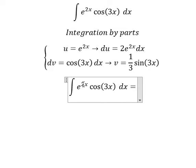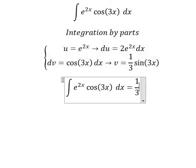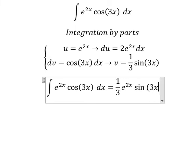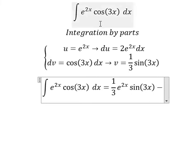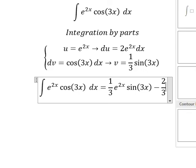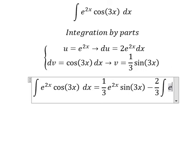So we have u multiplied by v, so we have 1 over 3 e to the power of 2x sine 3x, minus du multiplied by v. So we have 2 over 3 and we have the integration of e to the power of 2x sine 3x dx.